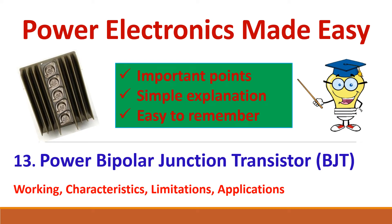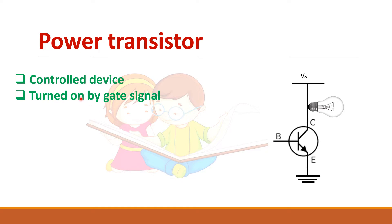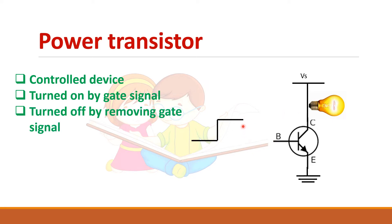Let us see about power BJT. These are power BJTs mounted on a heat sink. A power transistor is basically a control device, meaning that it can be turned on by a gate signal applied to the base of the circuit. If I remove the gate signal or make it zero, the device gets turned off. So it is a control device.